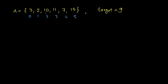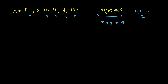In this problem you are given an array of integers and you are also given a target value. You have to find two integers out of this array so that their sum equals the target. A very simple approach would be to look at all such pairs — we know there are n times (n minus 1) divided by two such pairs if there are n numbers, so this will be O(n²).